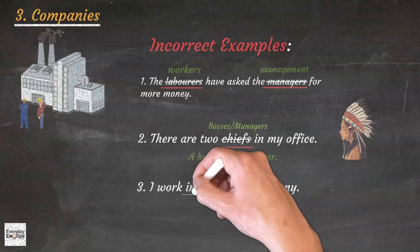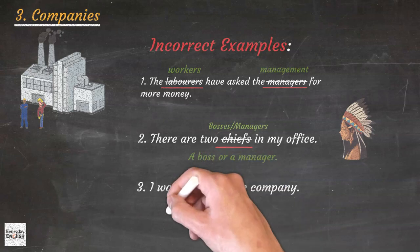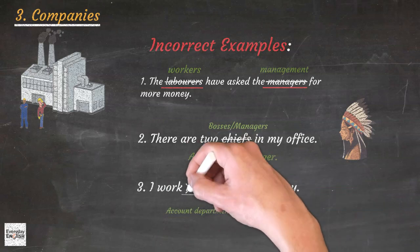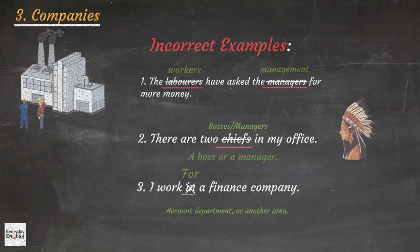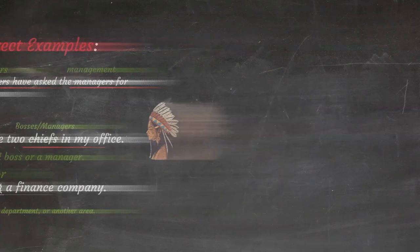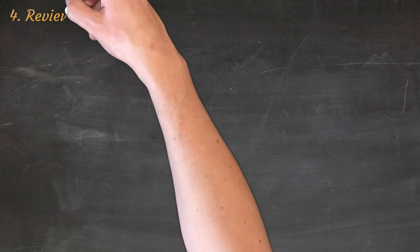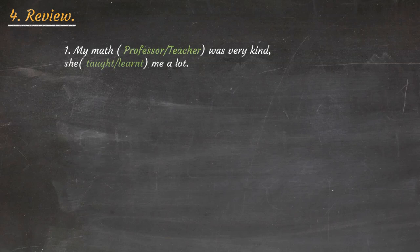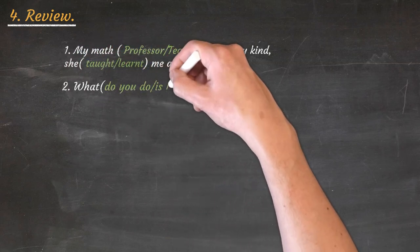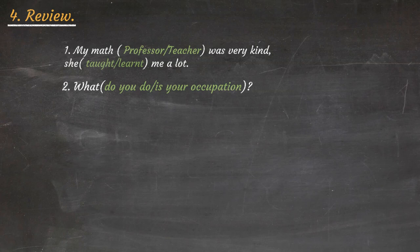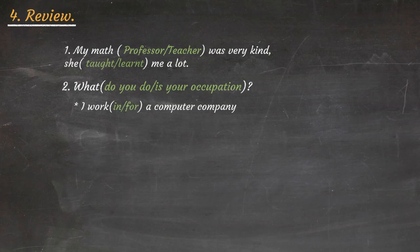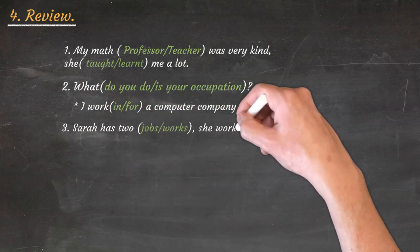Using 'in' in this expression suggests that you are referring to your place of work within the company, such as the accounts department or another area. The correct preposition should be 'for.' For example: I work for a finance company.